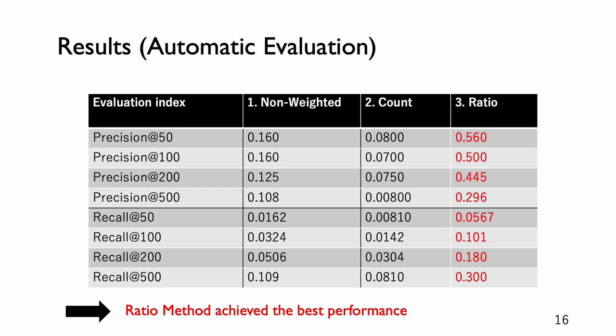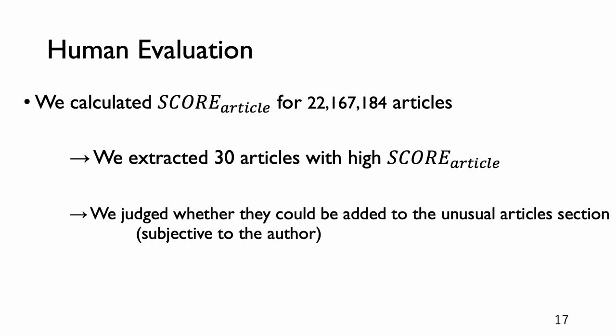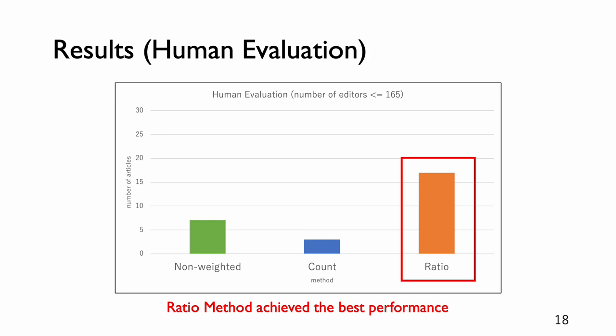We show the result of automatic evaluation. The value shown in red is the highest value. We can understand the ratio method achieves the best performance. We also conducted human evaluation. We calculated score_article for articles and extracted 30 articles with high score_article. I judged whether they could be added to the unusual articles section. The result of human evaluation also shows the ratio method achieves the best performance.